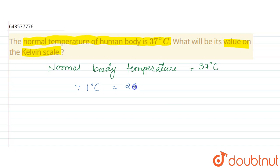Since one degree Celsius is equal to 273 Kelvin on scale, so 37 degree Celsius would be equal to 37 plus 273.